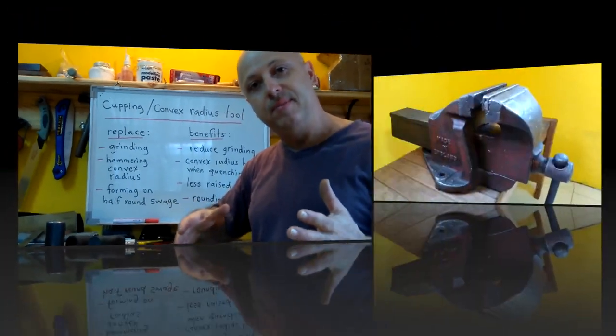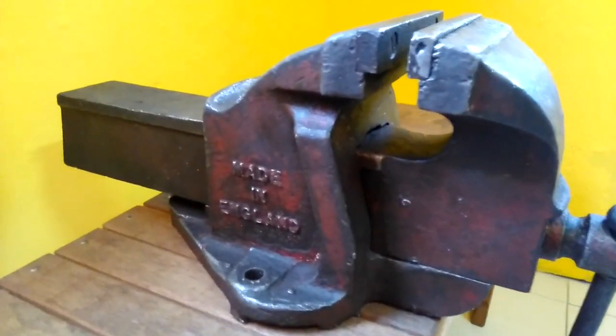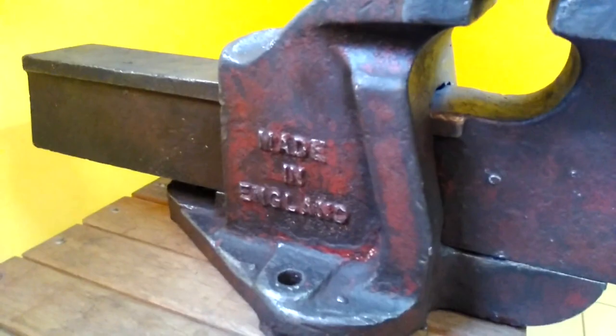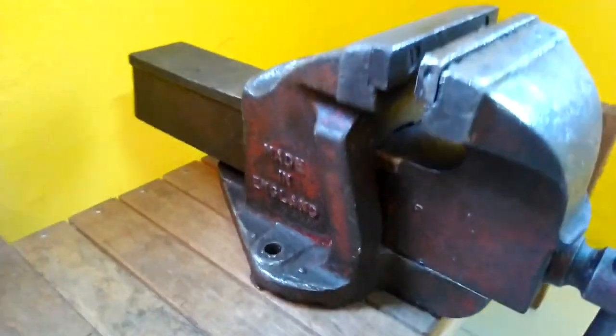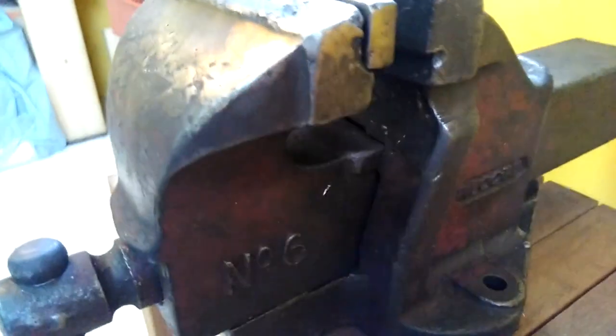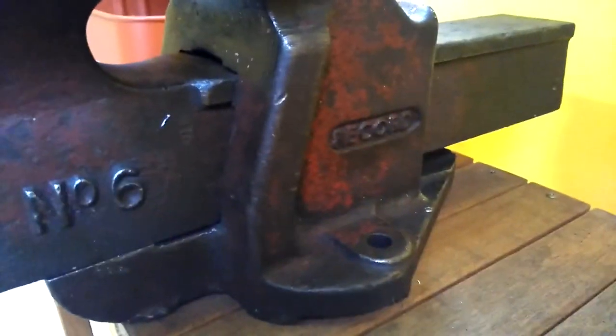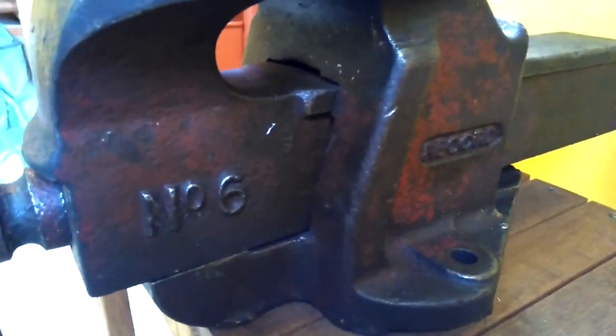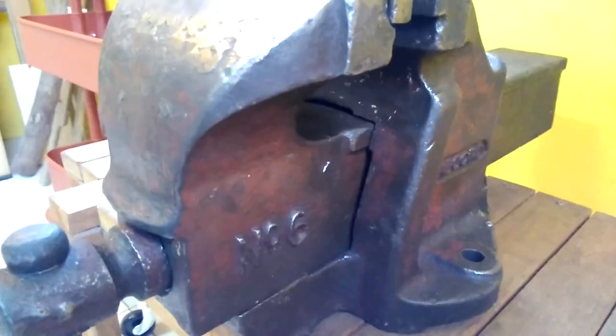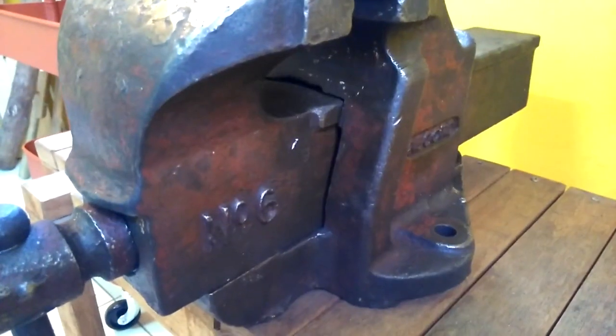Okay so here's the new old vise. It's a Record made in England, it's number six and it weighs about 30 kilos. This is a nice old one I guess before Erwin took the family business to China.